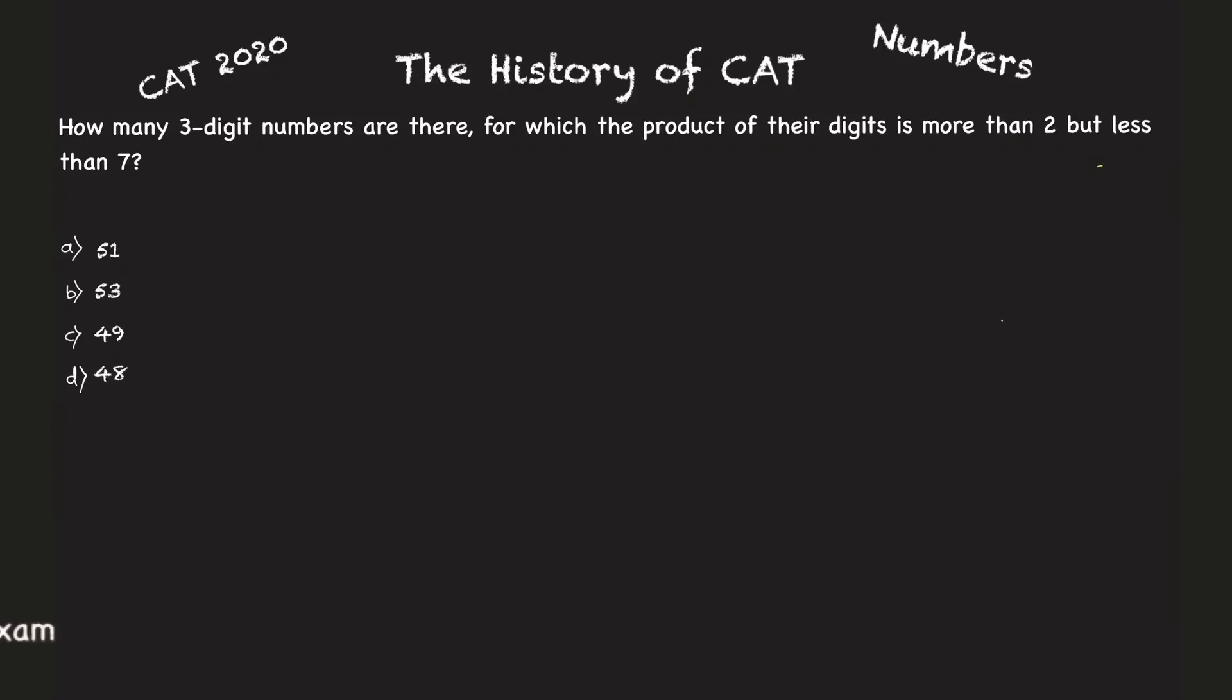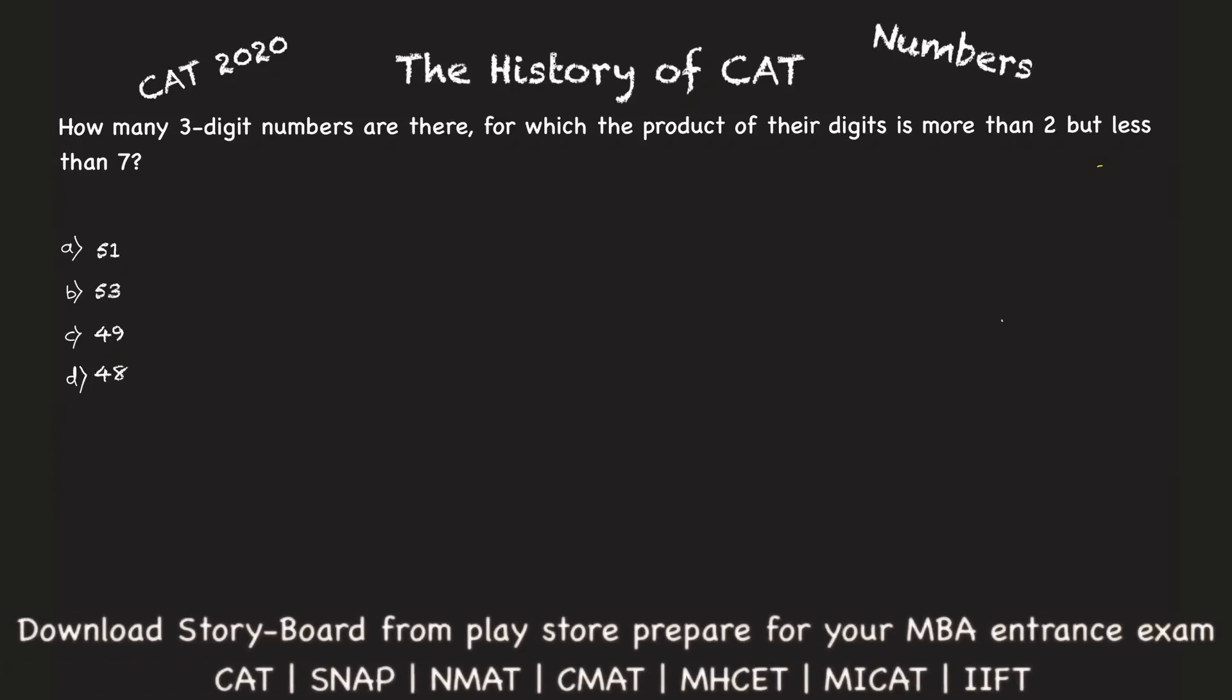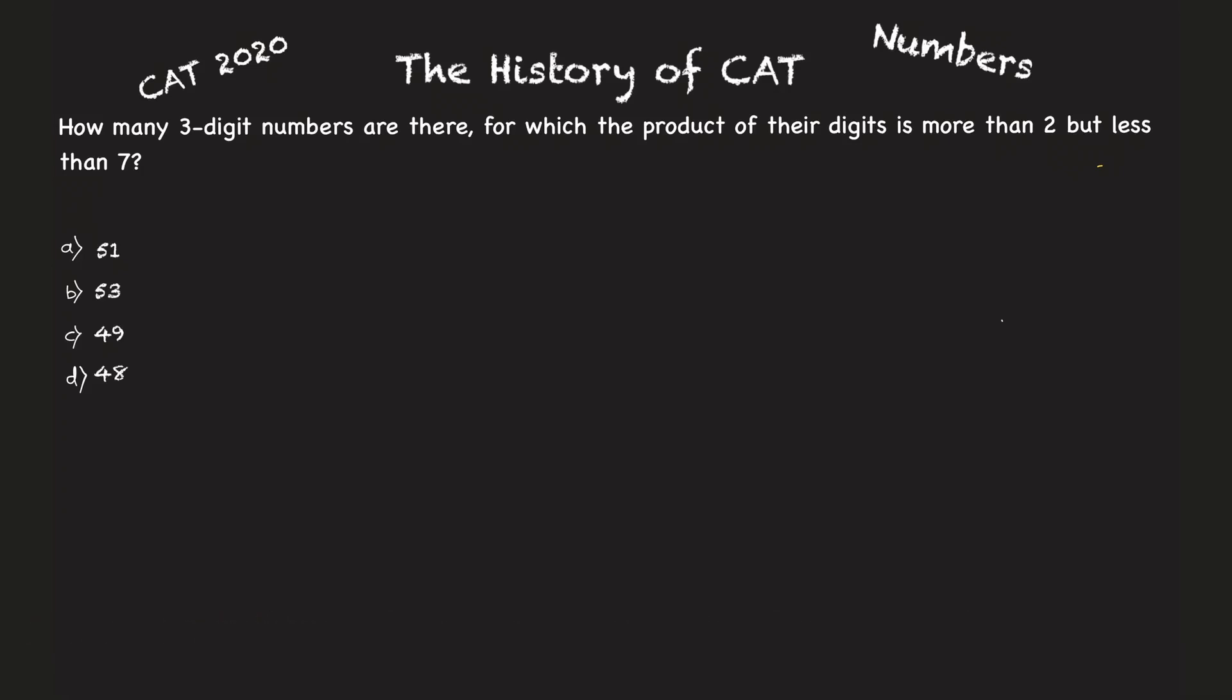Welcome to the history of CAT. Today we solve a problem from the chapter numbers which appeared in CAT 2020. How many three digit numbers are there for which the product of their digits is more than two but less than seven?